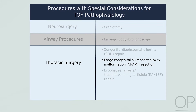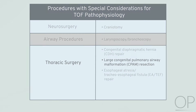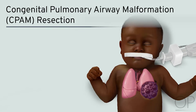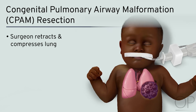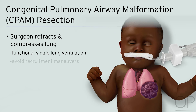Congenital Pulmonary Airway Malformation Resection. During the dissection phase and other key portions of the procedure, the surgeon often retracts and compresses the lung, which can result in functional single lung ventilation with significant hypoxia and hypercarbia. Extensive recruitment maneuvers with large tidal volumes or high peak pressures can significantly decrease venous return and worsen the right-to-left shunting.